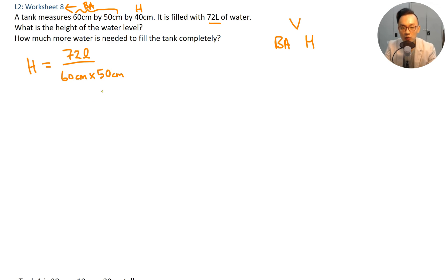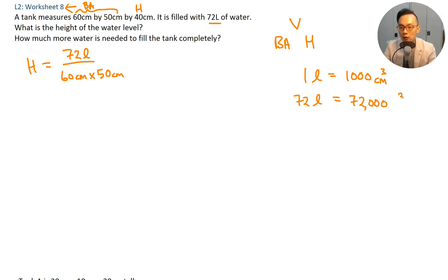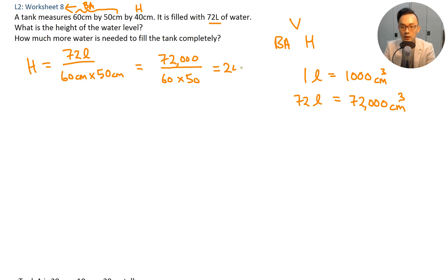Be careful of the units — you need to change from liters to cubic centimeters. One liter equals 1000 cubic centimeters, so 72 liters equals 72,000 cubic centimeters. This is the only part about volume that's a bit tricky. So 72,000 divided by 60 times 50 equals 24 cm.